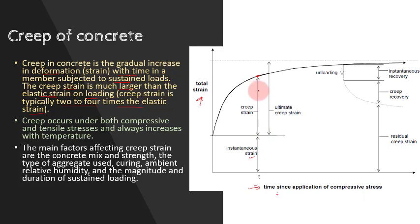This is sometimes expressed in terms of creep coefficient, defined as the ratio of creep strain at time t divided by instantaneous strain. The maximum value of creep coefficient is called the ultimate creep coefficient, designated as theta by the code. It can be observed from the graph that instantaneous strain is less than the creep strain. Moreover, under unloading conditions, if I remove the load, there is a residual creep strain which is left. Creep occurs under both compressive and tensile stress and always increases with temperature. Main factors affecting creep strain are the concrete mix and strength, type of aggregate used, curing, ambient relative humidity, and the magnitude and duration of sustained loading.